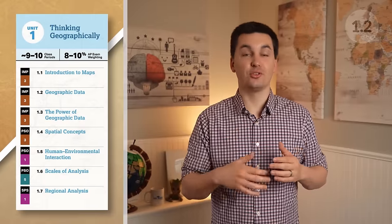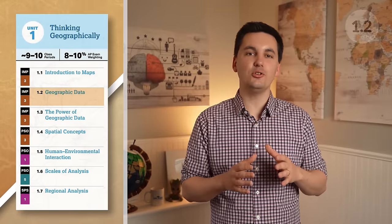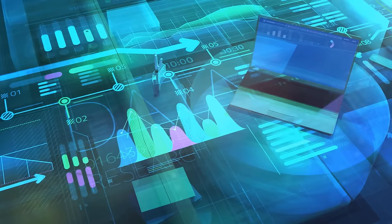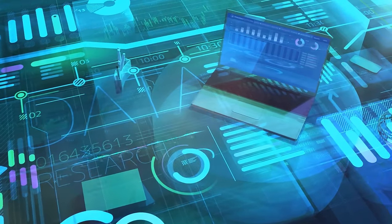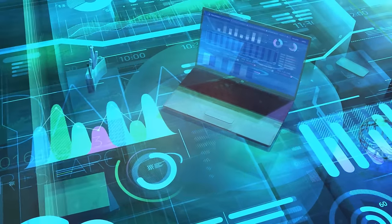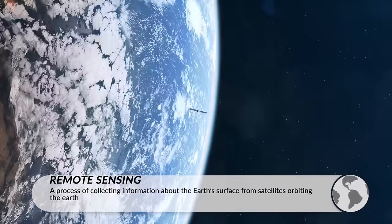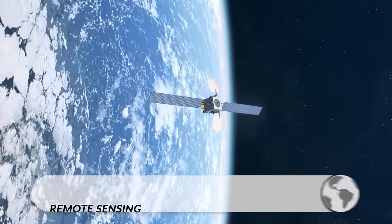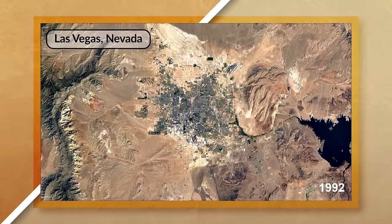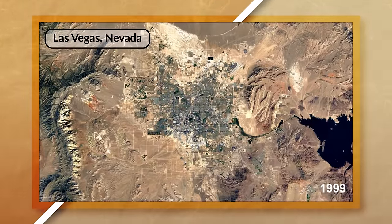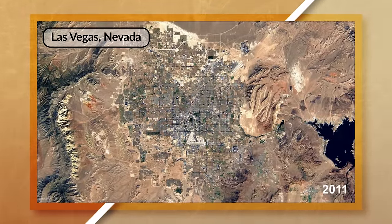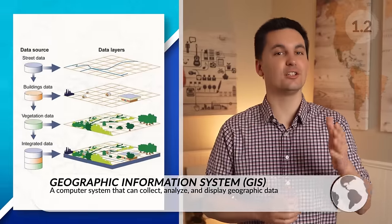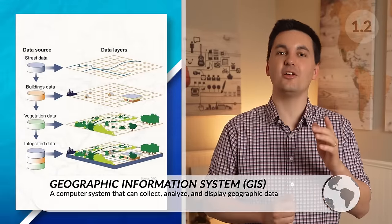We've been talking about maps, but we need to also go over geographic data — how it is collected and how it is categorized. One way geographers collect data is through remote sensing, which is a process of collecting information about the world from satellites orbiting the earth. This information can help us better understand changes that occur in different places over time and can be used in geographic information systems to create thematic maps. A GIS is a computer system that can collect, analyze, and display geographic data.